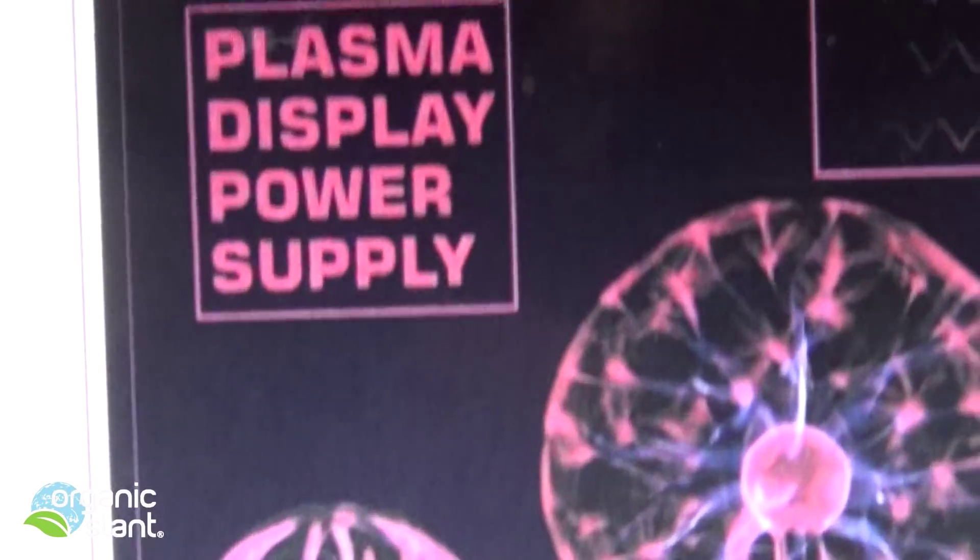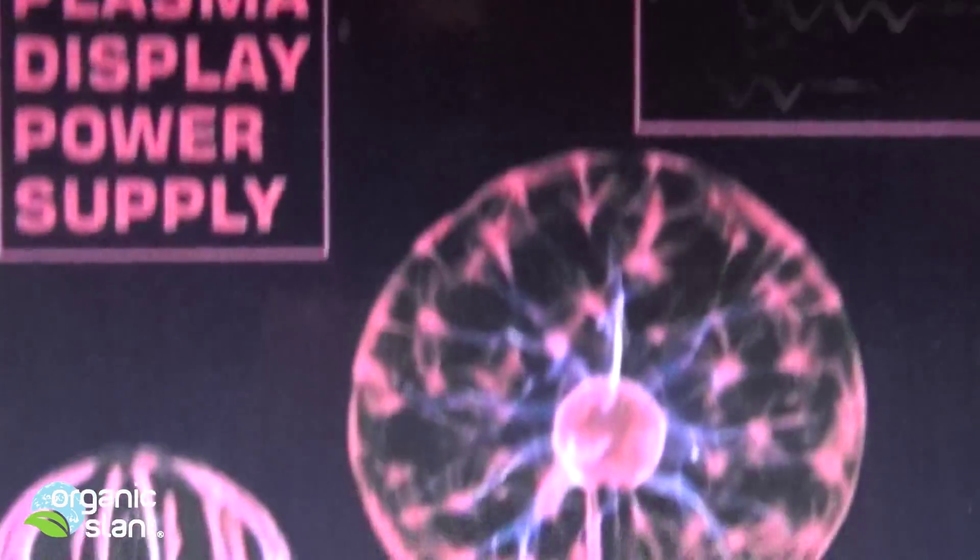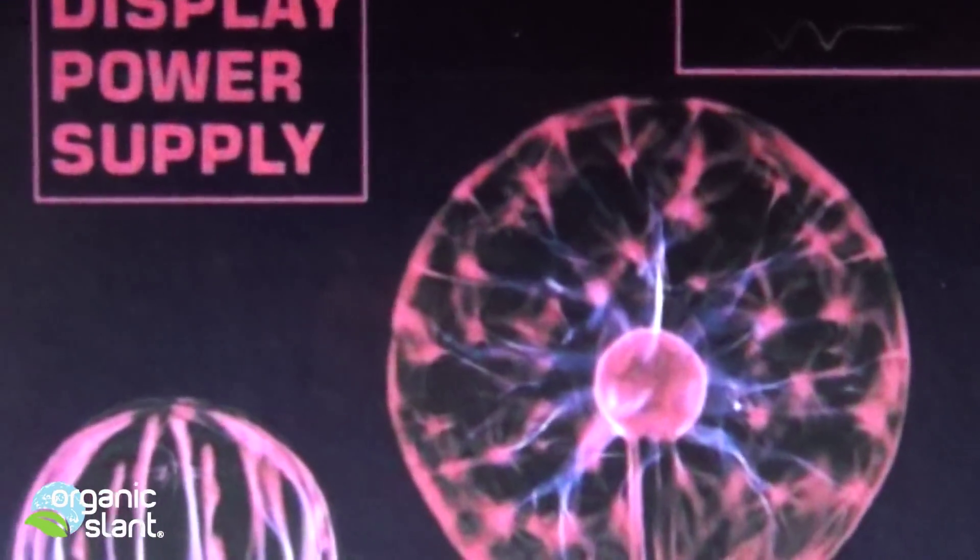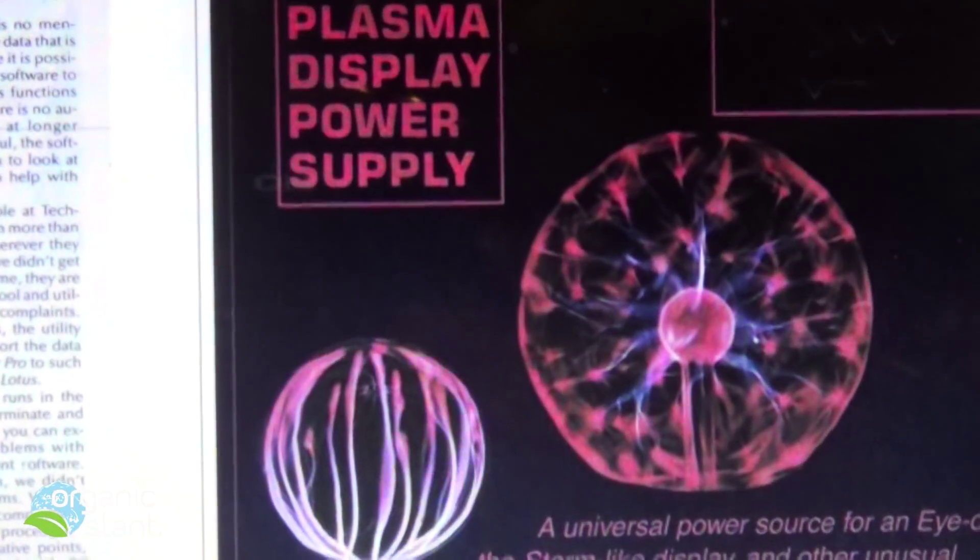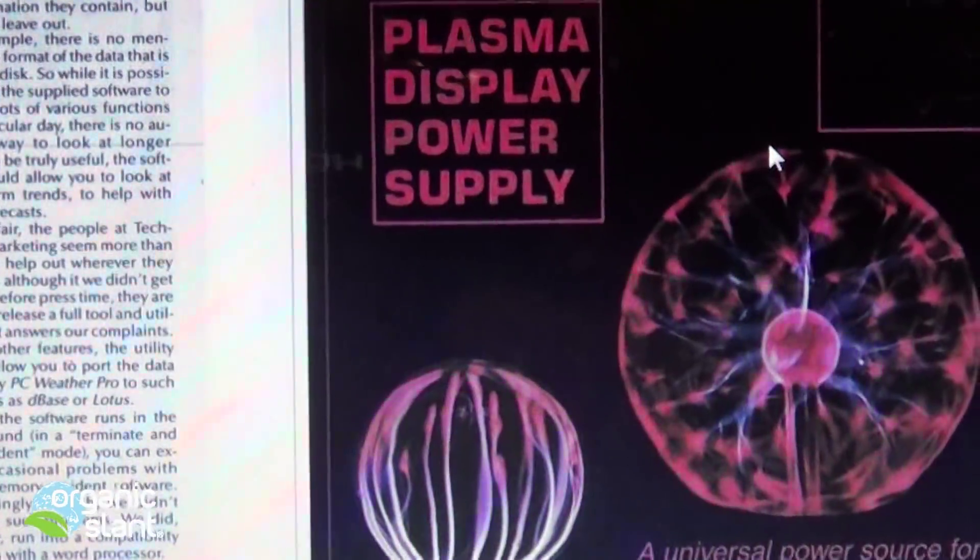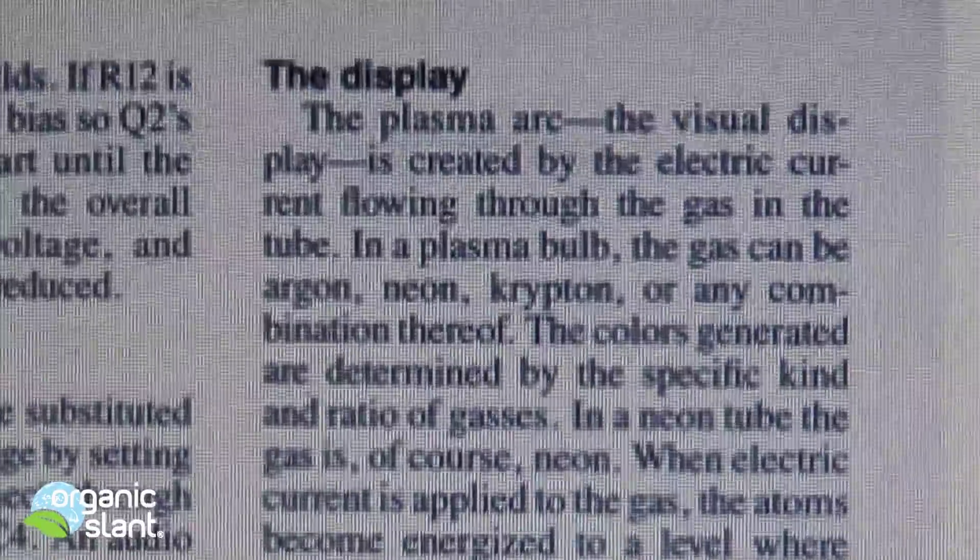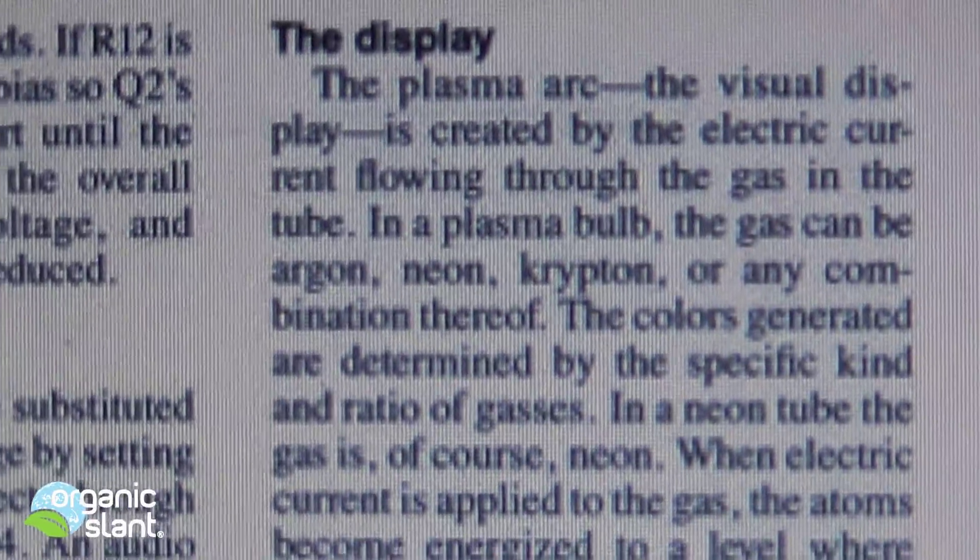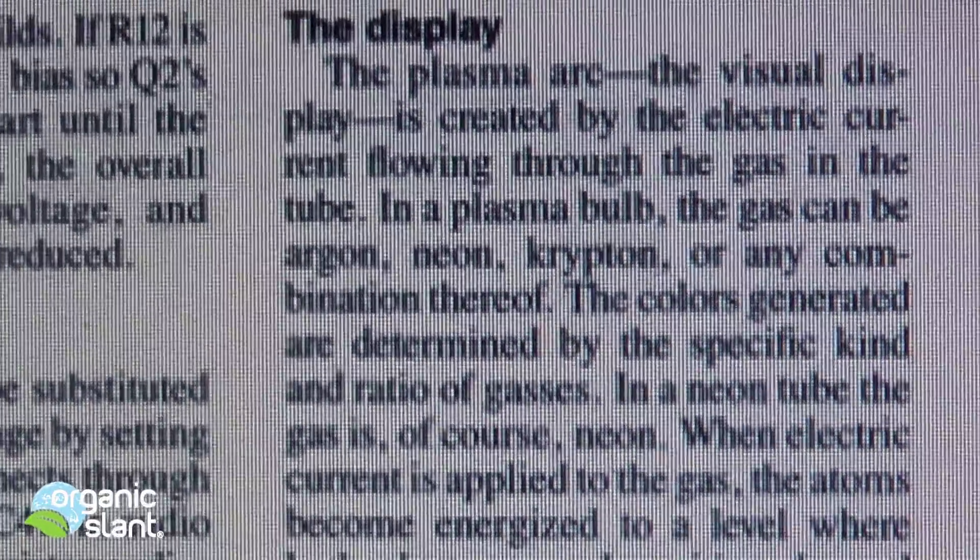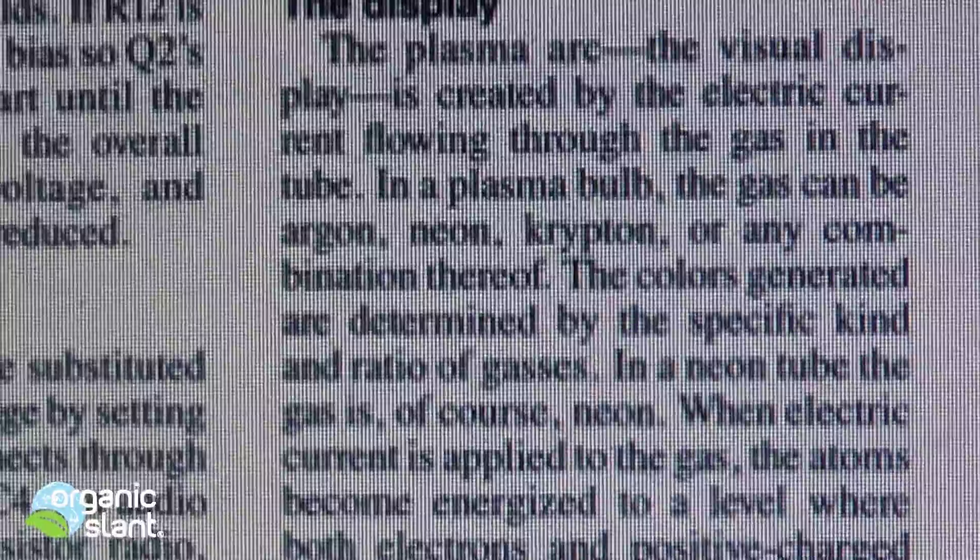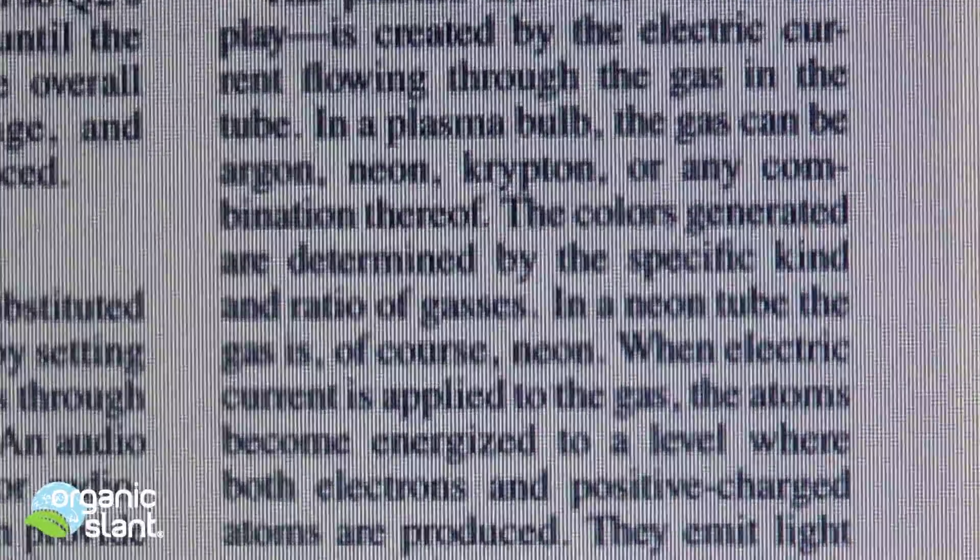Now this is an article from Radio Electronics, March 1988, and they had the plasma display where you could actually create one yourself if you wanted to. Let's check out what they say. The display, the plasma arc, the visual display is created by an electric current flowing through the gas in the tube. In a plasma ball the gas can be argon, neon, krypton or any combination thereof.